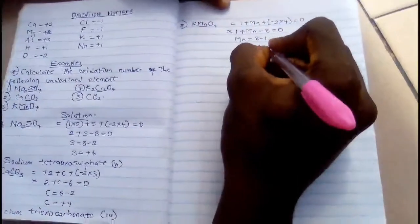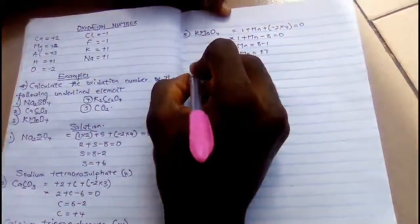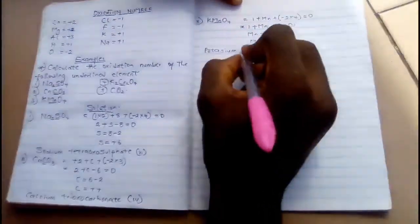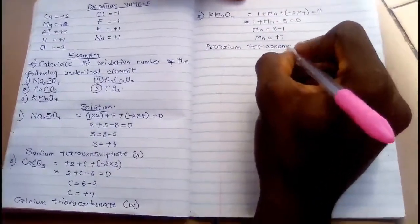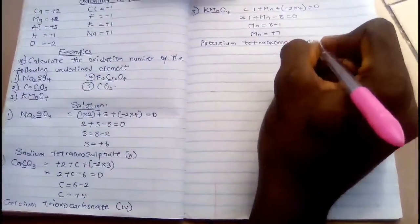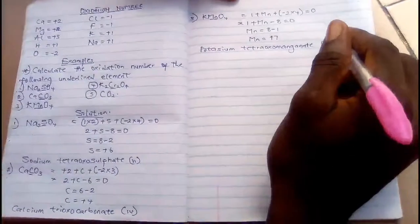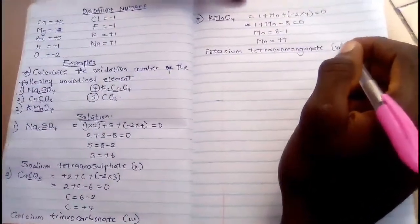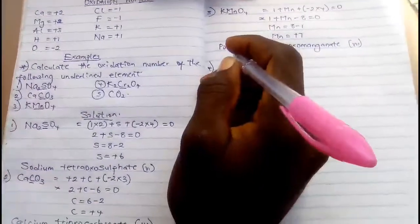Then Mn = +8 - 1, so Mn = +7. Then the IUPAC nomenclature for this compound is potassium tetra-oxo-manganate VII. That's the IUPAC nomenclature. So don't be confused when they say potassium tetra-oxo-manganate VII, it's just the oxidation number. To get the answer is very simple.